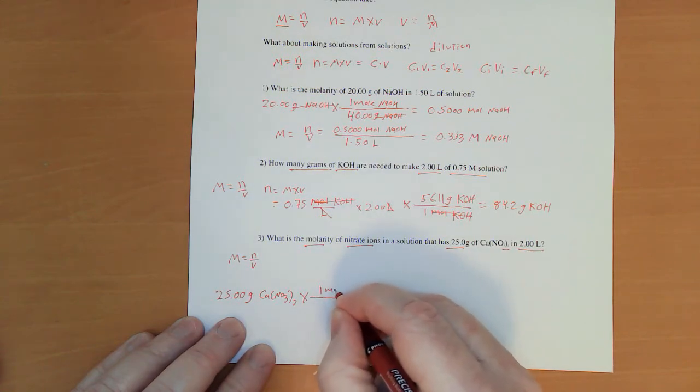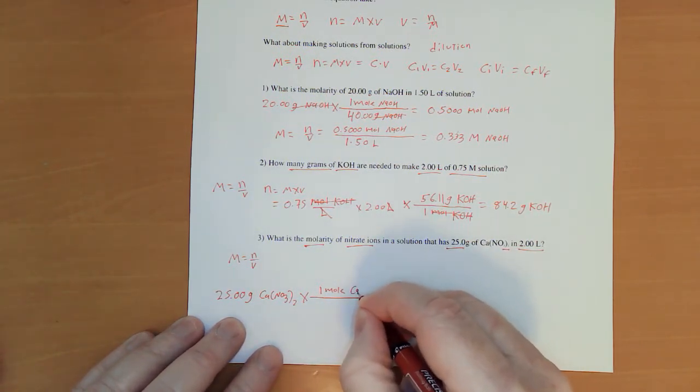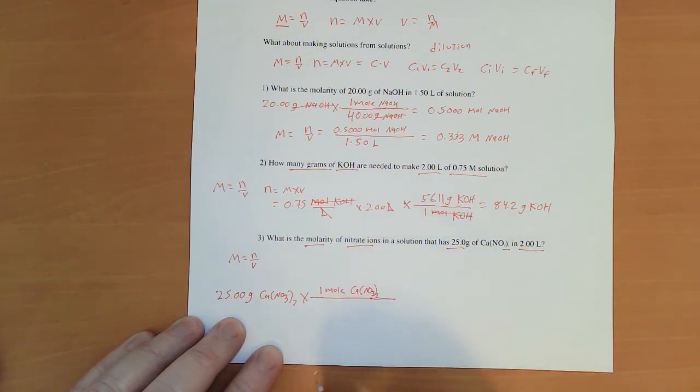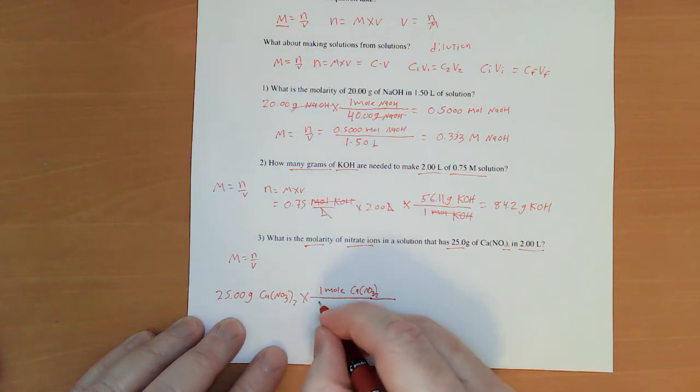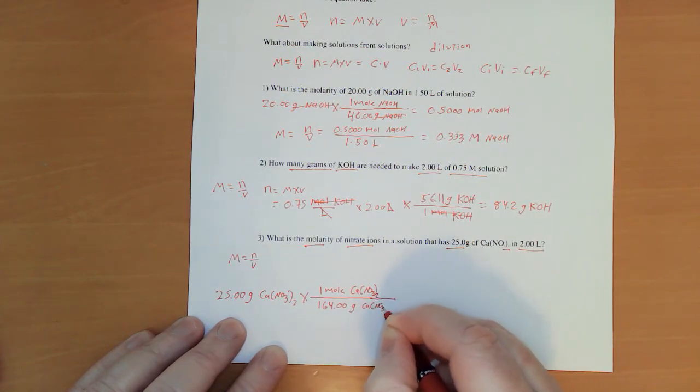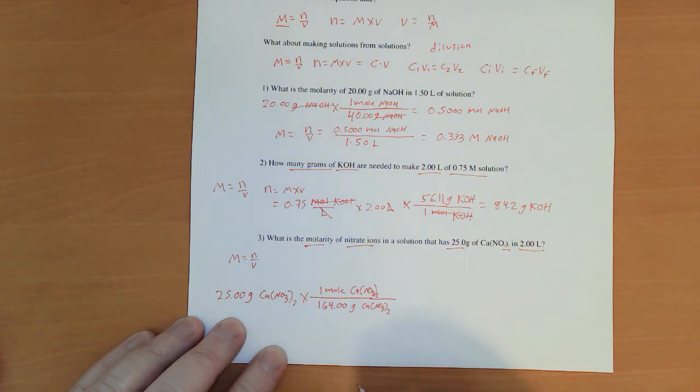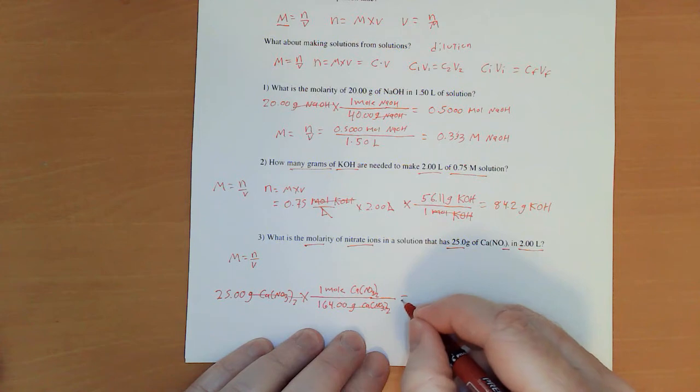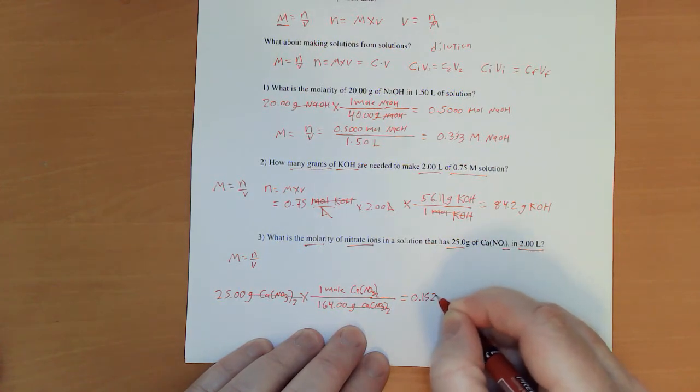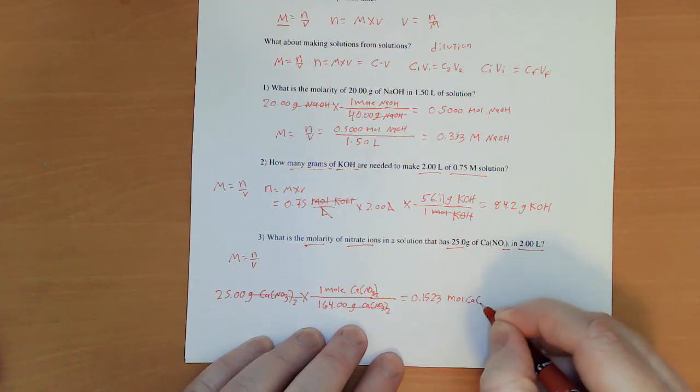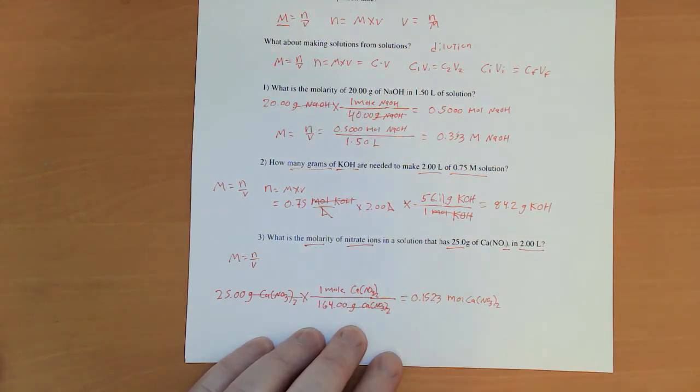Now, I'm going to say one mole of the calcium nitrate. Remember to label everything. I don't care who taught you before what they taught you. You're on my playground now. You're in my yard. You label everything. Grams cancels. That equals 0.1523 moles CA NO3 sub 2.